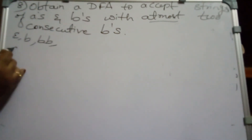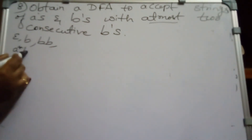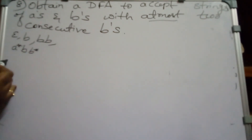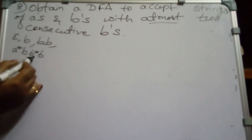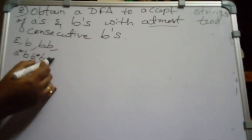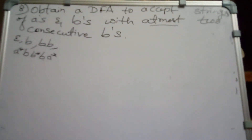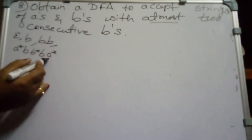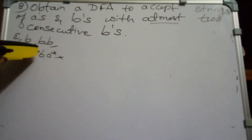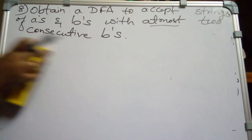Now the second problem: draw a DFA for strings of A's and B's with at most two consecutive B's. The string can begin with A followed by B, or have at most two B's. Only two B's are allowed; a third consecutive B means the string gets rejected.